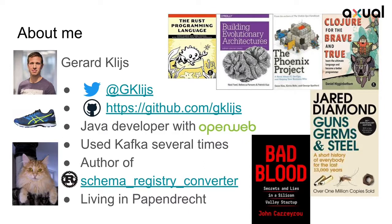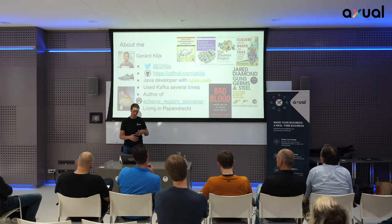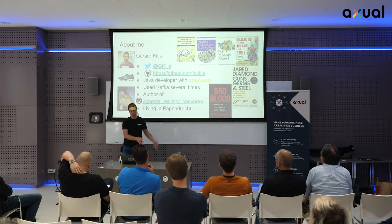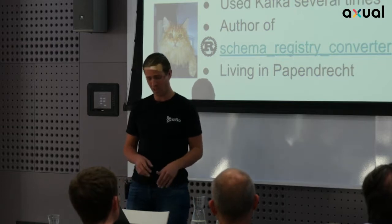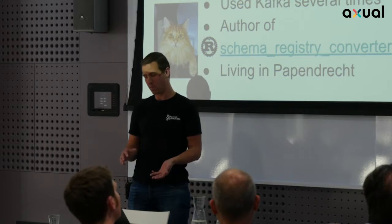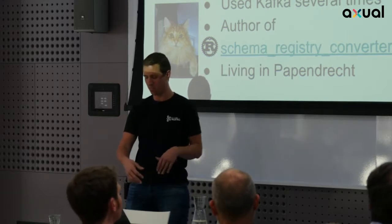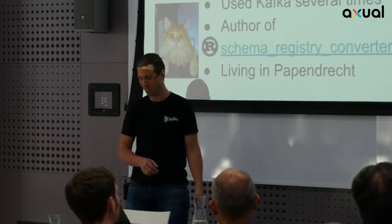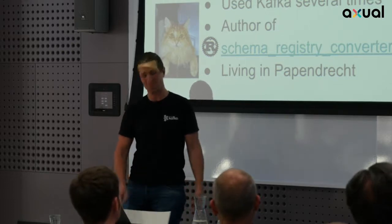Something about me — my Twitter and stuff. As Jor said, I'm working at OpenWeb, mostly Java development. I used Kafka several times; for example, in one project we used Kafka for all the page views that users of a CMS were getting, putting them to Kafka so they could be seen in Kibana for analysis. I'm also the author of the Schema Registry Converter, a Rust library to use the Confluent Schema Registry, because that was something missing and I wanted to write stuff in Rust. I'm living in Papendrecht, and I have some books, interests, and cats — I also like to run sometimes when I'm not developing.